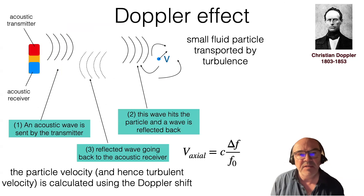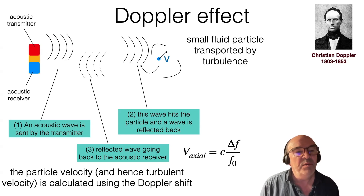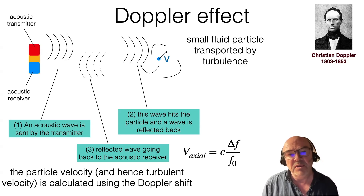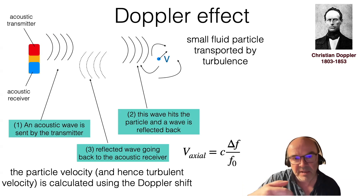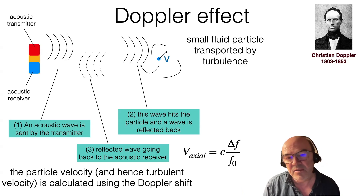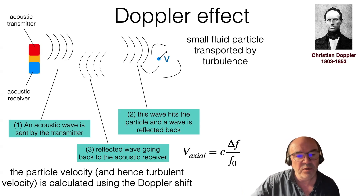In practice, this is used in field systems to measure the velocity of a fluid. We have an acoustic transmitter and acoustic receiver — a wave is sent, it reaches a particle with a given velocity, and part of that energy is reflected back to the receiver. You can then estimate the particle velocity v by simply estimating the shift in frequency.